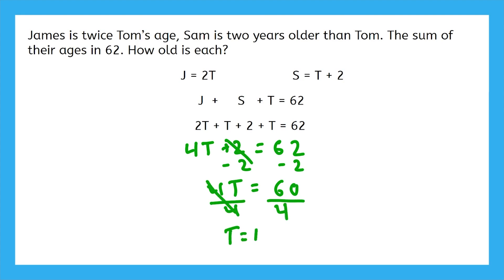Tom is 15. So then, James is twice that old, or 30, and Sam is 2 years older than Tom, or 17. So what do you think happens if we add 15, 30, and 17?